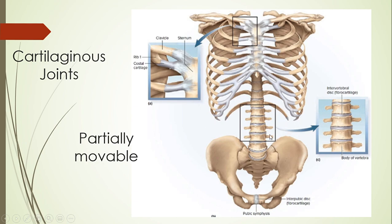We don't want lots of movement occurring in our spine because it is protecting our spinal column — we need that to be protected very well, but we still need a little bit of range of motion. So the range is given there. Another example is the pubic symphysis — the joint in the front between the two pelvic bones — where there is a slight range of motion that can occur. So that is cartilaginous joints.